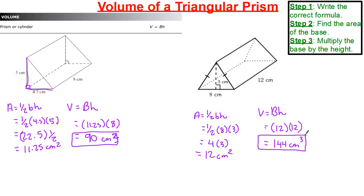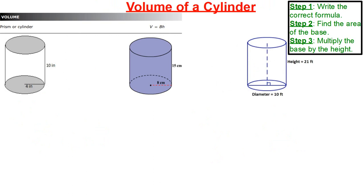That's it for triangles. Just remember the triangle formula: half the base times the height — that gives our base value. Then we multiply by the height of the prism. Let's look at our last example, which is most likely going to be the most complicated, especially when we're problem solving. Pay very close attention.